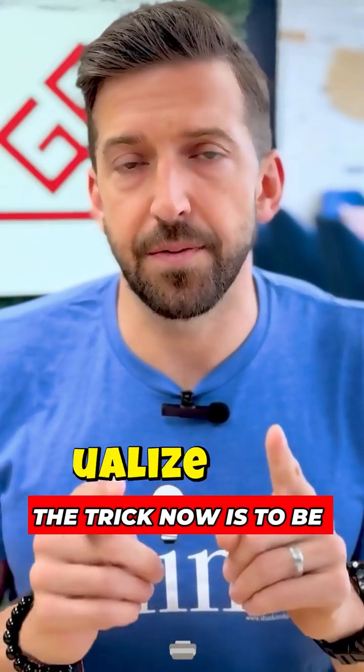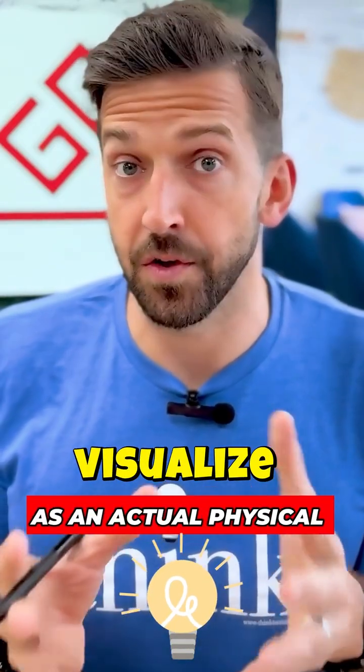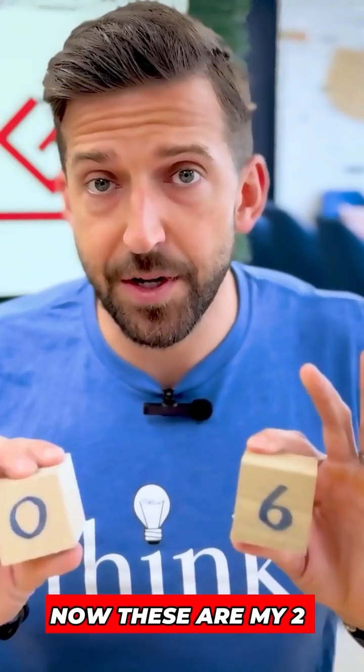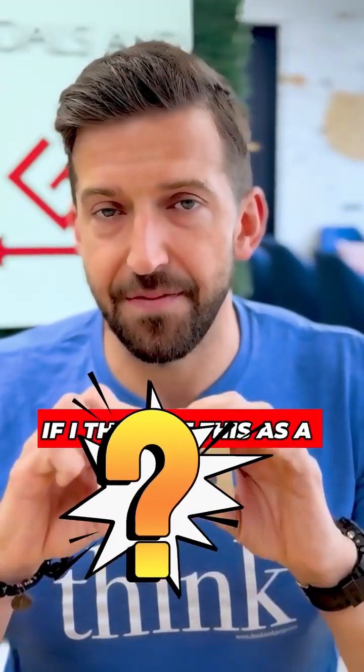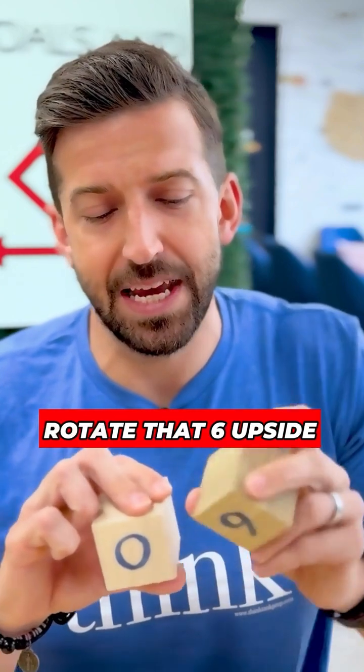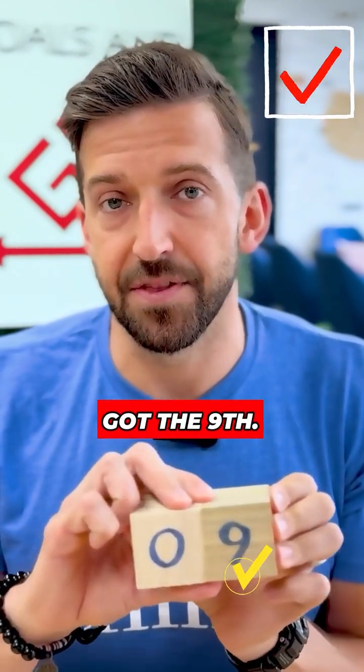The trick now is to be able to visualize this as an actual physical cube once again. Now these are my two cubes and I've got the sixth right here. How do I get the ninth? If I think of this as a cube, I can simply rotate that six upside down and now I've got the ninth.